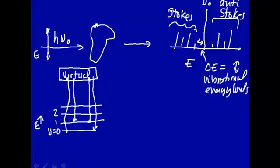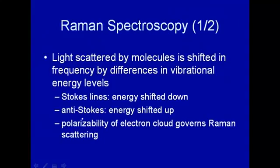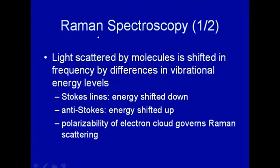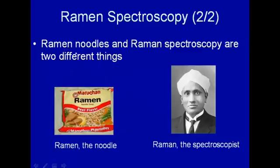So essentially you get a vibrational spectrum by the shifts in frequency from your incoming light. What governs this? The polarizability of the electron cloud around the molecule. Polarizability means how easily the electrons can move — or by what amplitude the electrons can move — in response to an oscillating electric field. Electrons that are very easily polarized will oscillate a lot, compared to electrons that are not easily polarized, which won't oscillate as much. Now, I've been teaching this course for quite a long time and I've noticed that students sometimes get confused between Raman the spectroscopist who discovered Raman spectroscopy, and Raman the noodle. These two things are different.